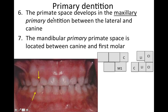The primate space — that's a gimme question on the boards. The primate space develops in the maxillary primary dentition between the lateral and the canine. On the mandibular, you just go one back: it's going to be between the canine and the first molar. This picture shows the side of the teeth — up here between the lateral incisor and the canine, and then between the canine and the molar on the bottom.